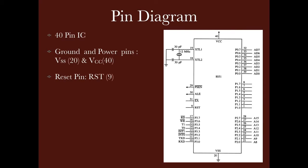In this IC, there is a reset pin, pin number 9, which we use to reset or restart. Then there are two pins for clock connection, pin number 18 and 19. With the clock pins, the speed of the microcontroller is decided.